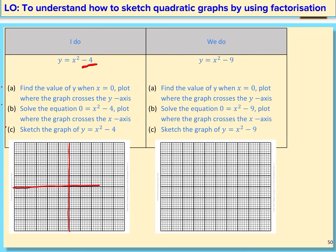So let's draw our axes, going up in 2s: negative 2, negative 4, 2, 4, 6. Now let's plot our y-intercept, which is (0, negative 4).